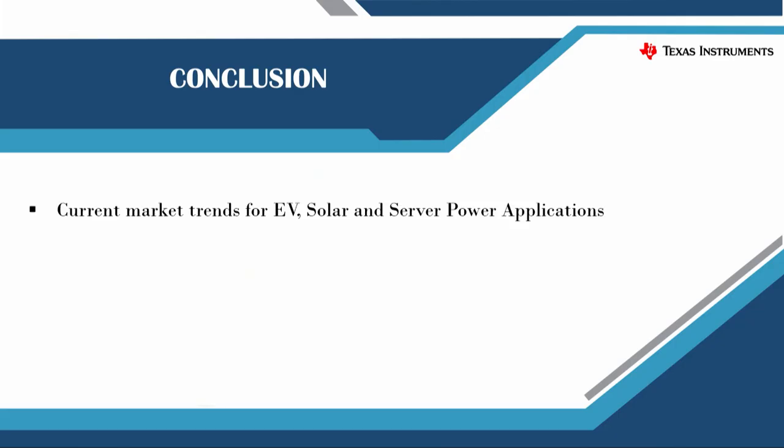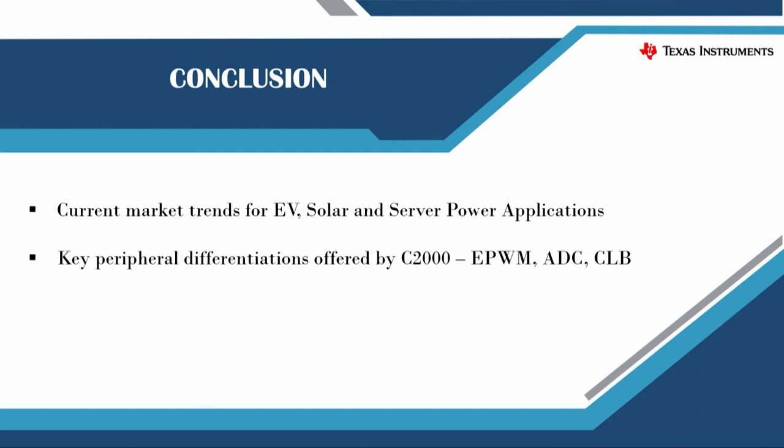As a conclusion, in this lecture we studied the current market trends for EV, solar, and server power applications. We also went through some of the key peripheral differentiations offered by C2000 — that is EPWM, ADC, and CLB. Lastly, we went through getting started using the C2000 ecosystem in CCS and C2000ware. I hope you enjoyed the video. Thank you.